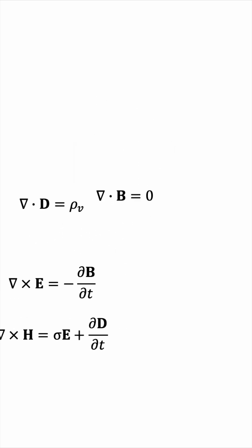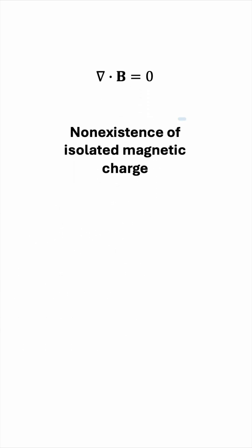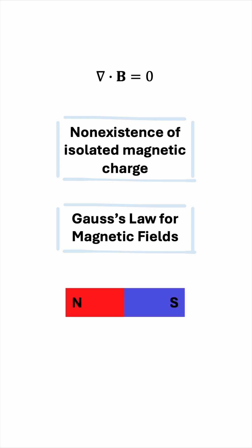This equation is called non-existence of isolated magnetic charge, or Gauss's law for magnetic fields. Basically, it says that there is no such thing as a lone pole. So if you were to split this bar magnet in half, you would get a pair of north poles and south poles.